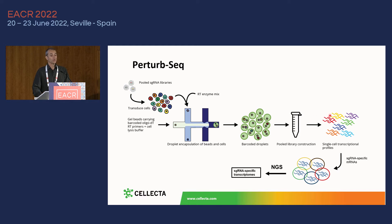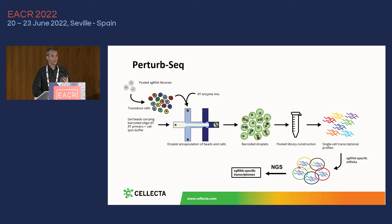When you build each cell's transcriptome, you can link all the mRNAs from a cell to the sgRNA expressed in that cell, because they share the same barcode. This allows you to assign to each sgRNA its own specific transcriptome.